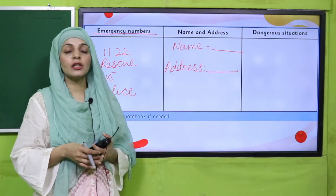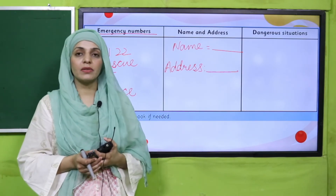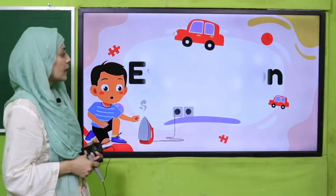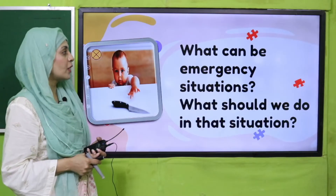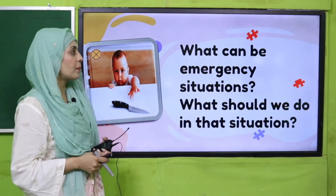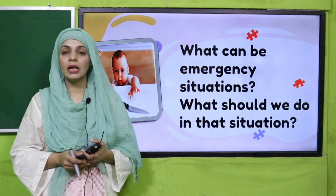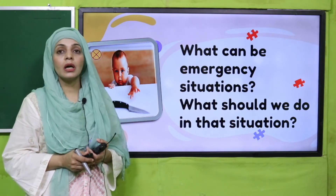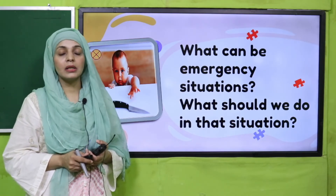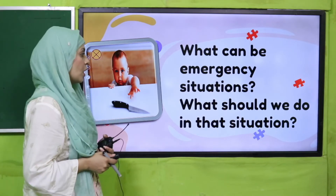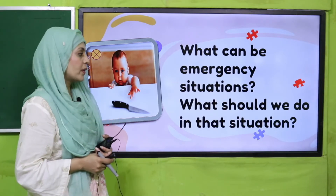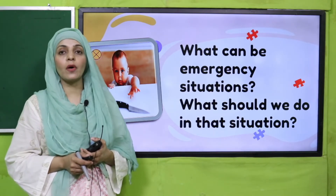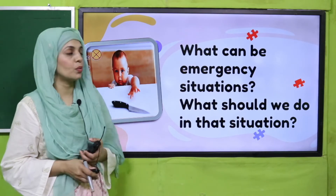Pause the video and quickly do this activity. I hope everybody has done it. For evaluation: what can be emergency situations? A robbery, a fire breaking out, an earthquake — these are all emergency situations. What should we do? You can call the police on 1-5, or you can call the rescue on 1-1-2.